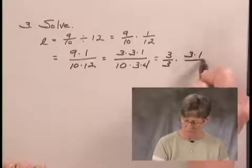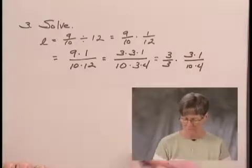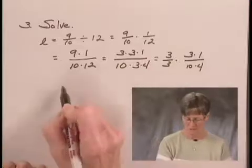In the numerator, I have 3 times 1. In the denominator, I have 10 times 4. 3 over 3 is equal to 1. So I have 1 times this expression, which just gives me that expression, 3 times 1 over 10 times 4.